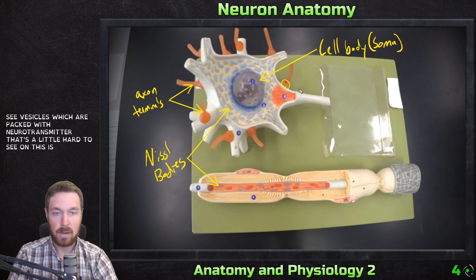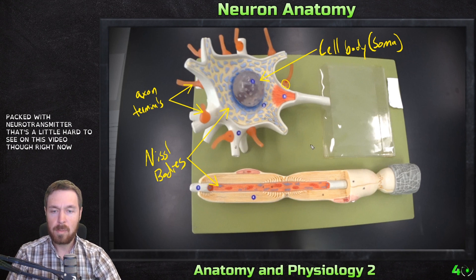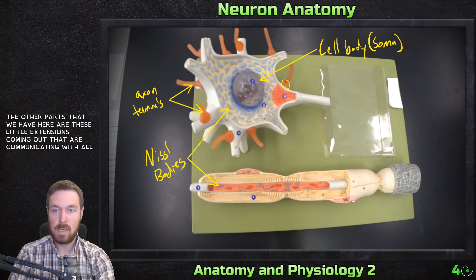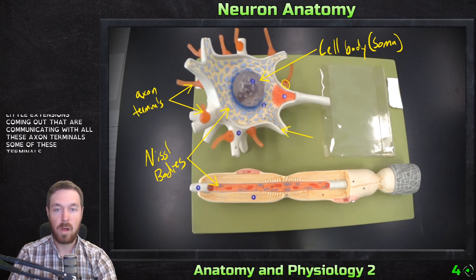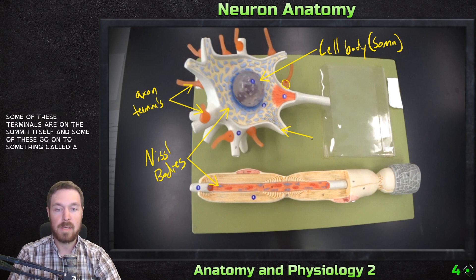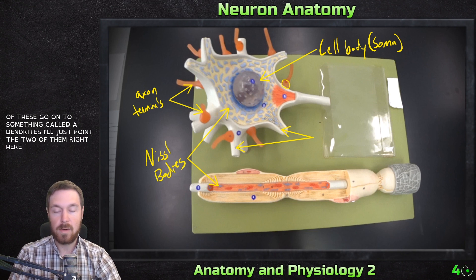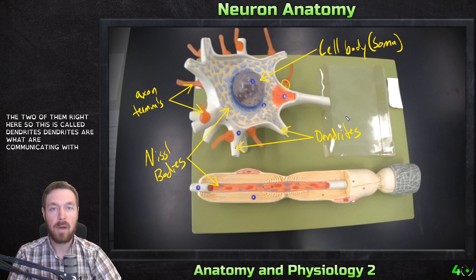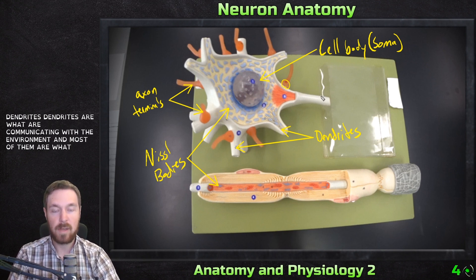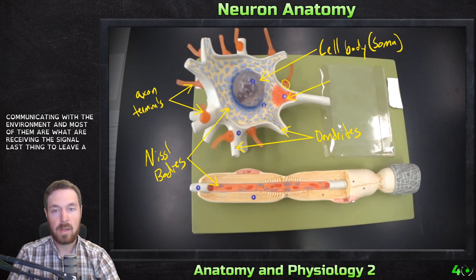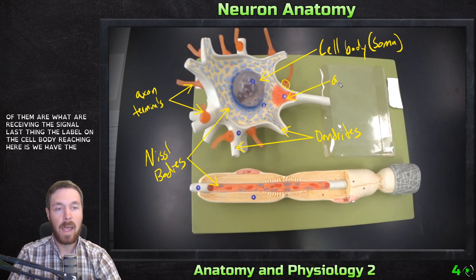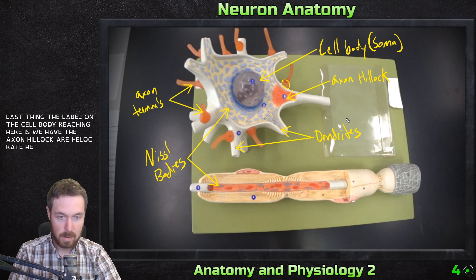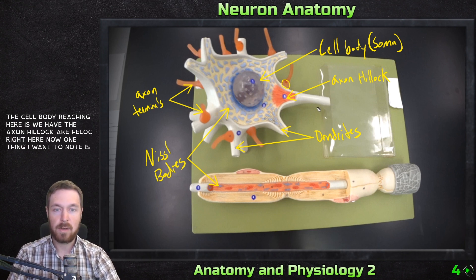The other parts here are these little extensions coming out that are communicating with all these axon terminals. Some of these terminals are on the soma itself, and some go on to something called a dendrite. Dendrites are what are communicating with the environment and most of them are receiving the signal. The last label on the cell body region is the axon hillock, right here.